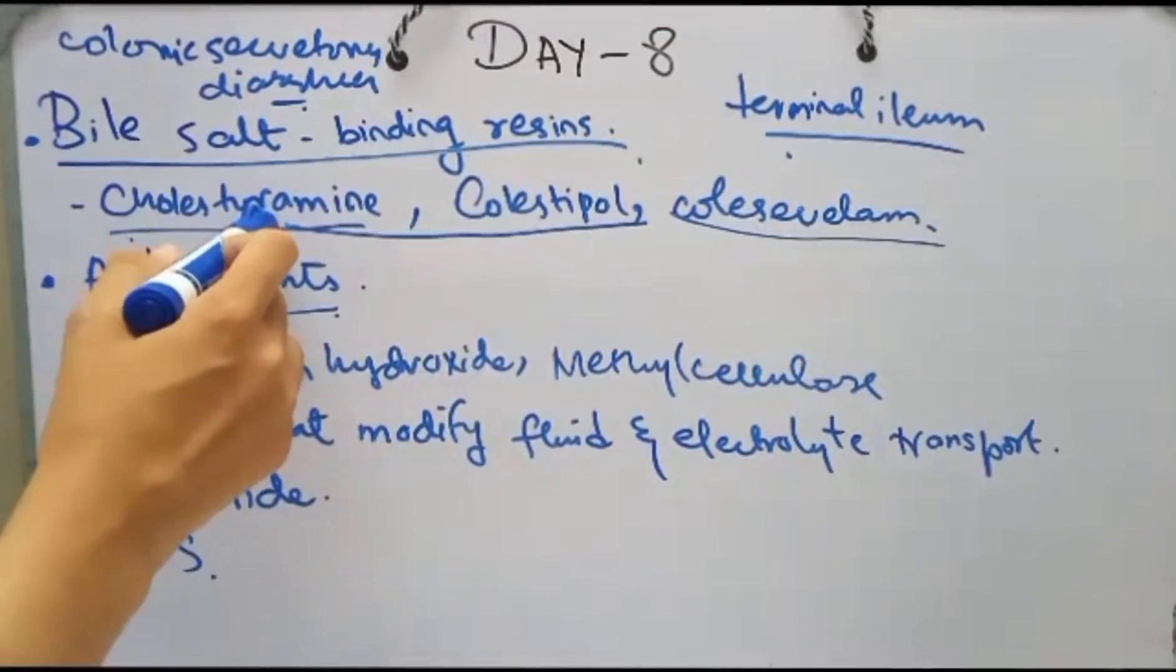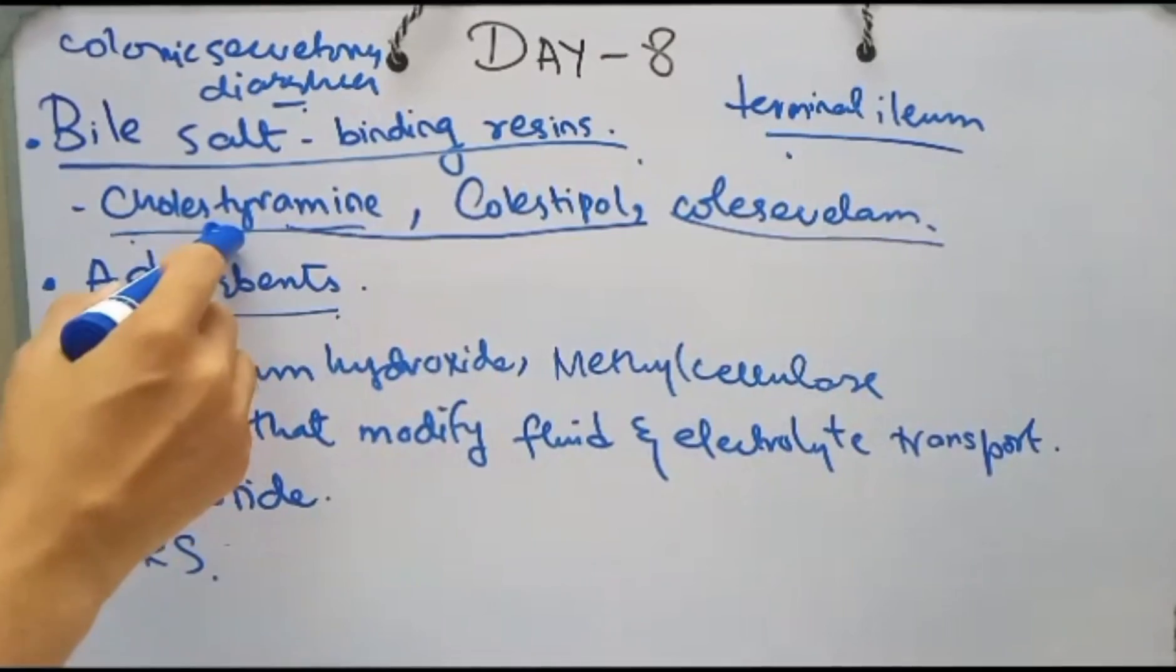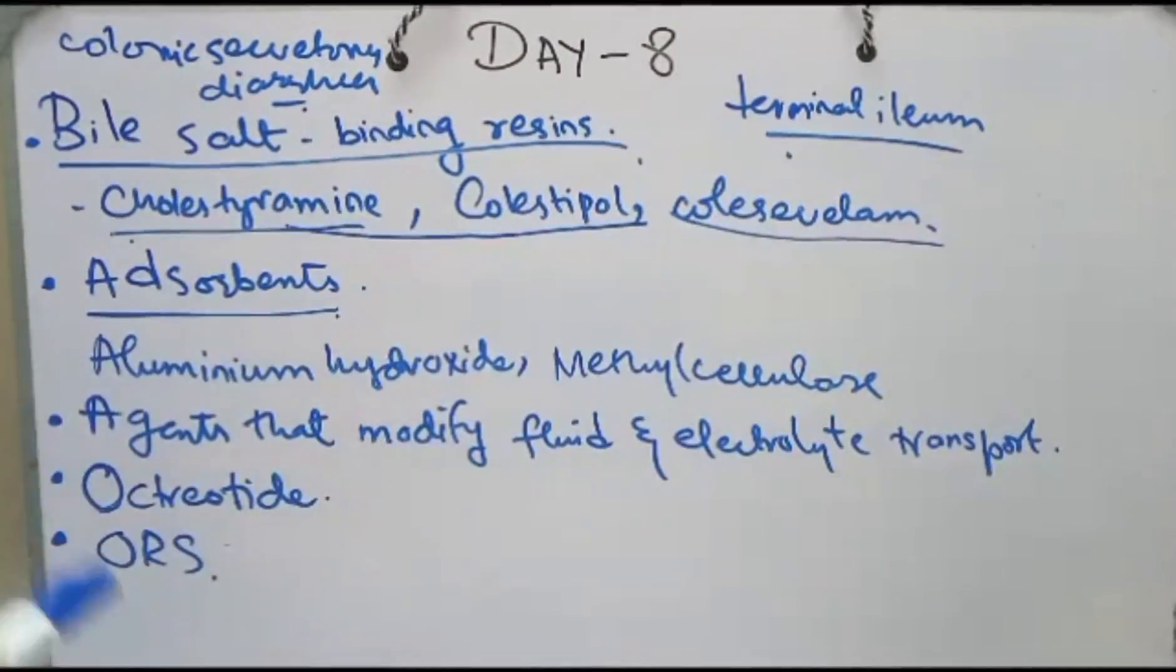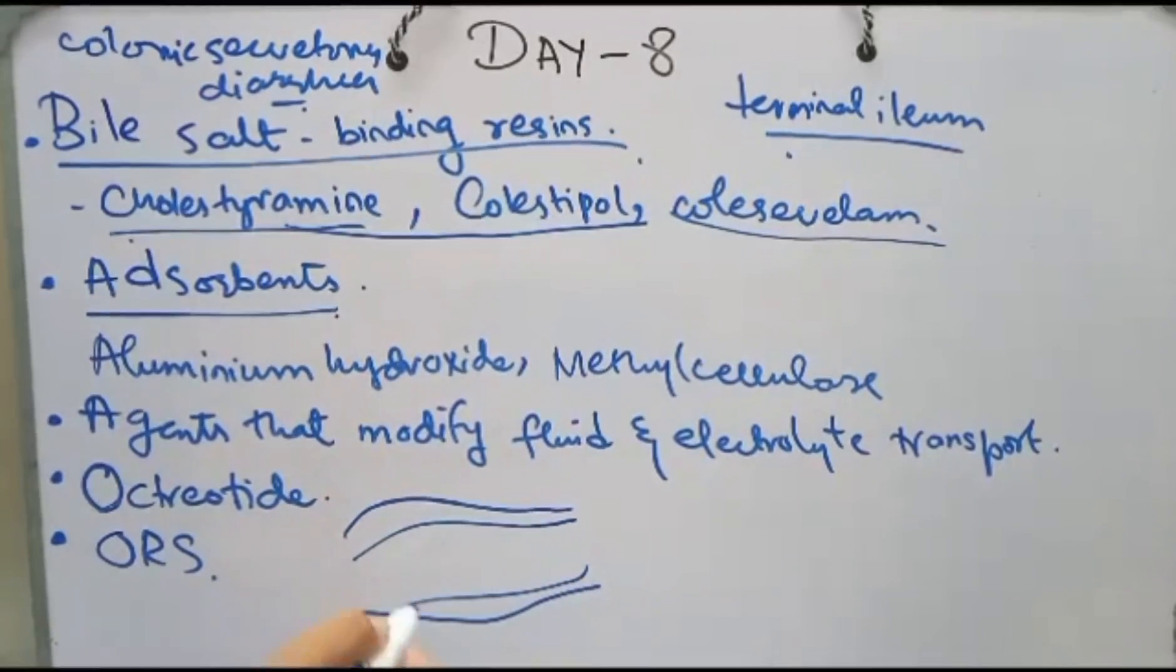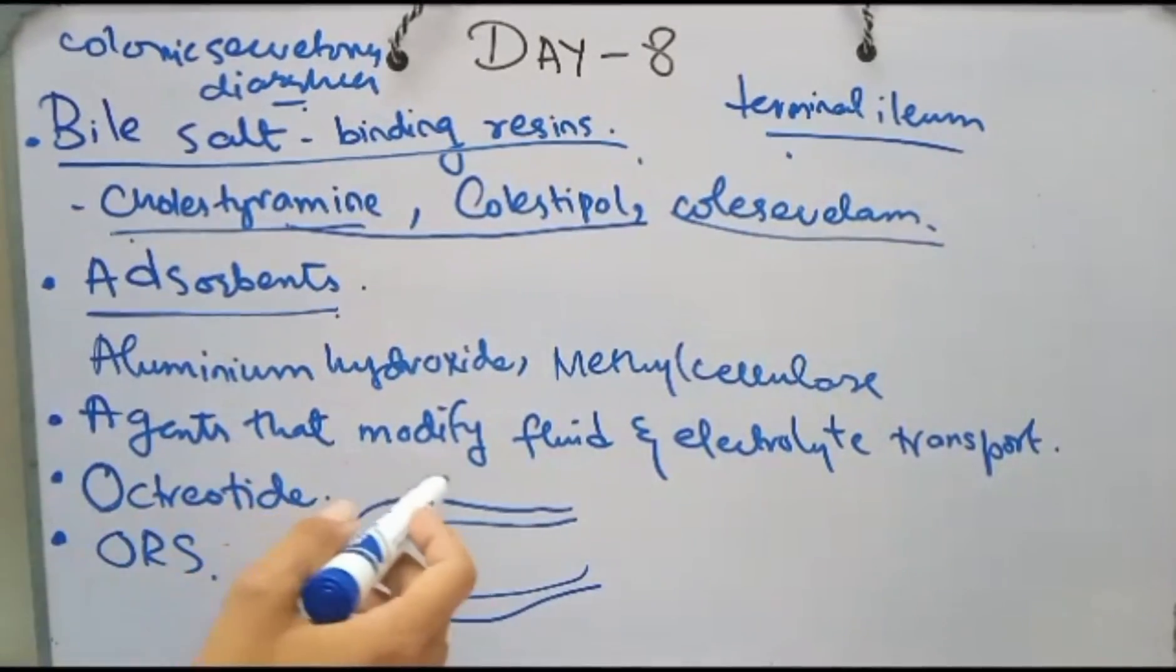Another class is adsorbents, for example aluminum hydroxide and methylcellulose. These control diarrhea by adsorbing intestinal toxins and providing a coating and protecting action on the intestinal mucosa.